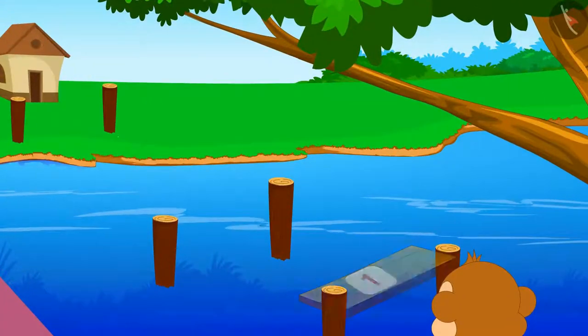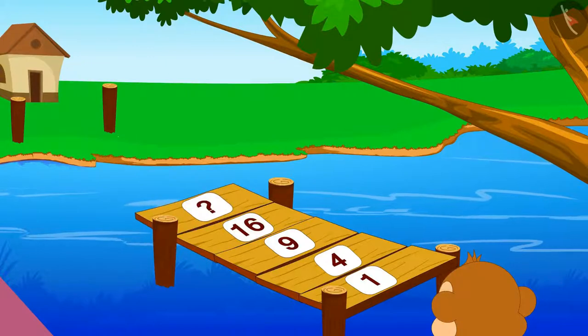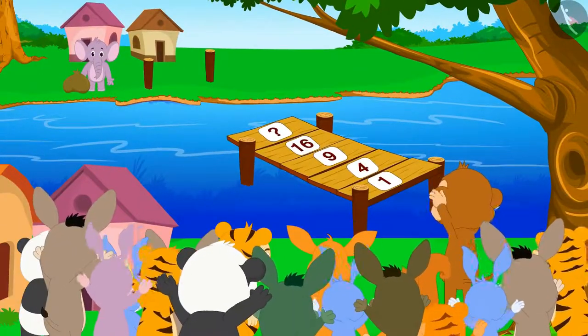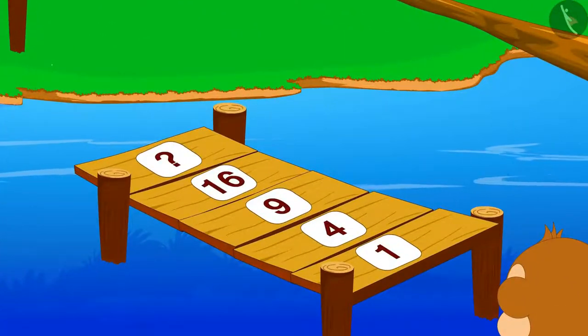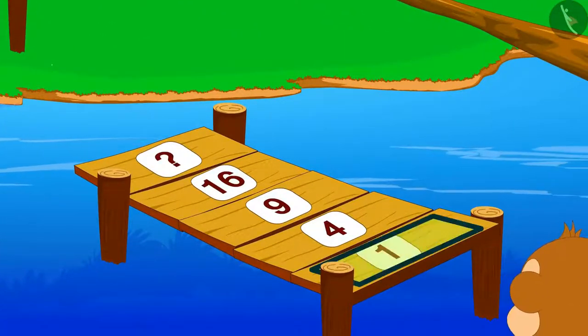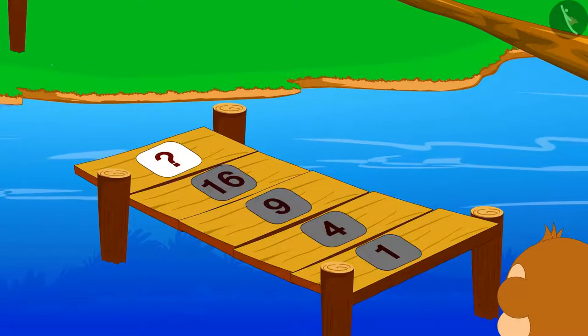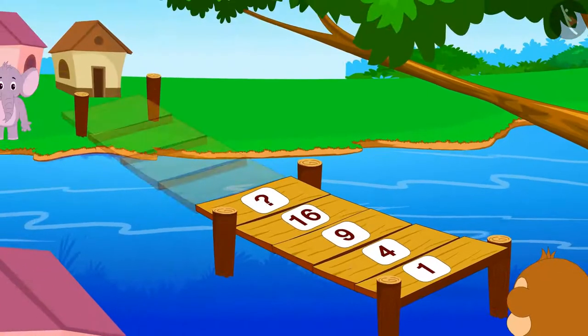Then one day suddenly the villagers saw that a magical bridge automatically started getting built over the river. The villagers got very excited. There was something special about that bridge—a number was written on every one of its planks. But suddenly the bridge stopped building further and a question mark appeared on the last plank of the bridge.